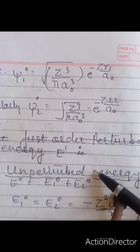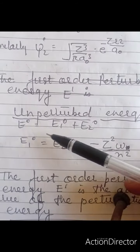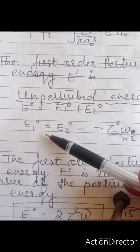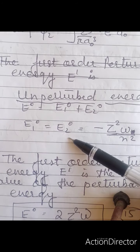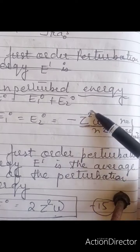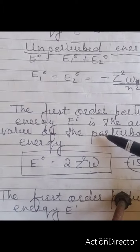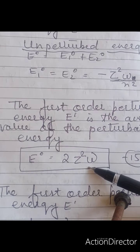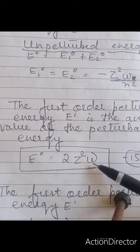We calculate the unperturbed energy first: E⁰ = E₁⁰ + E₂⁰. For the ground state, E₁⁰ = E₂⁰ = minus Z²ω/n². The first order perturbation energy E¹ is the average value of the perturbation Hamiltonian, which equals 2Z²ω.